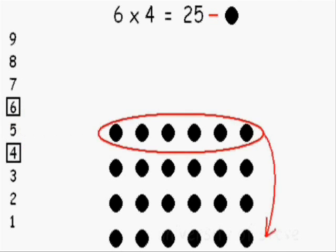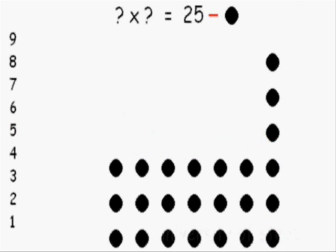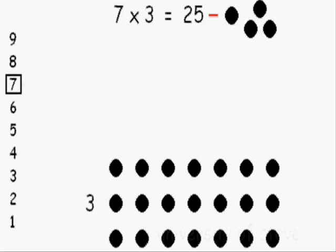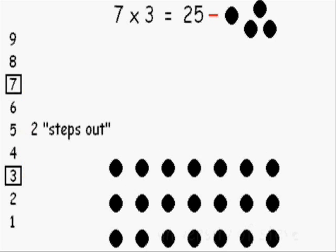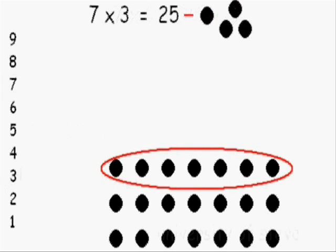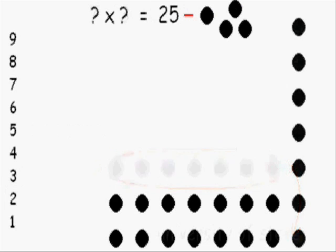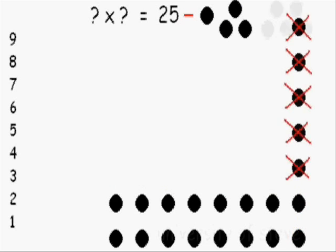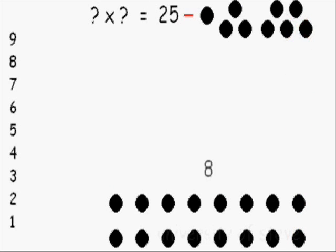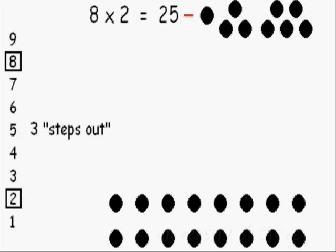Put the top row on its side, you have the same number of dots again, but if you take away the funky part, then you're left with 7 times 3. 7 times 3 was 2 steps out. Slide the top row off again, and you have the same number of dots — take away the funky part and you're left with 8 times 2. 8 times 2 is 3 steps out.